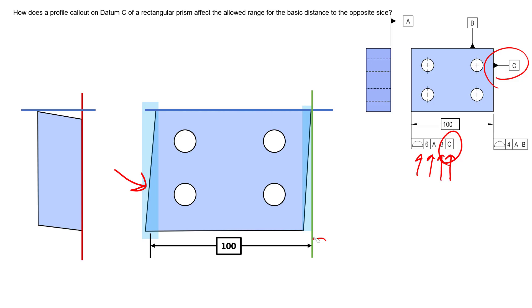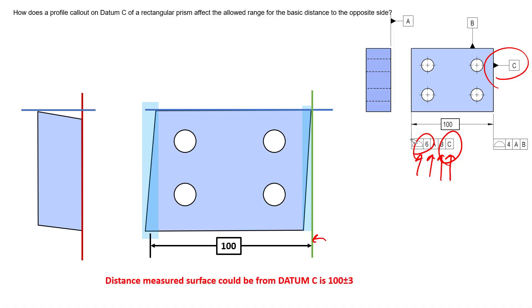Because datum C is listed in the feature control frame, we measure 100 millimeters from the datum reference frame zero — not from the feature itself — and center our six millimeter tolerance zone at that 100 millimeters. As long as the surface sits inside that zone, we've met the specification. This truly controls the location of that surface from datum C at 100 millimeters plus or minus three millimeters.